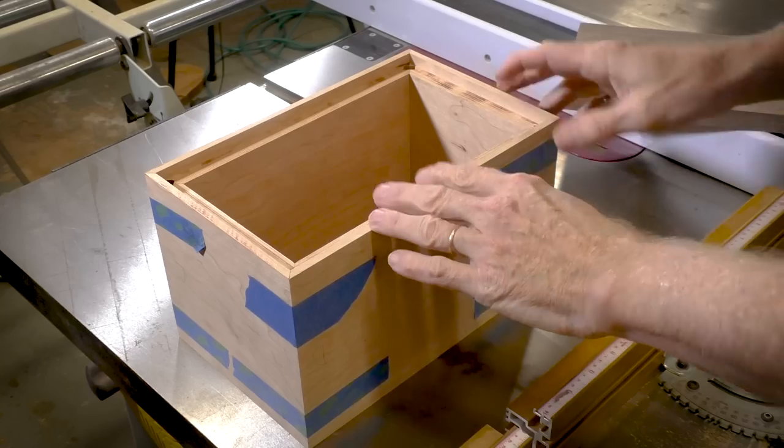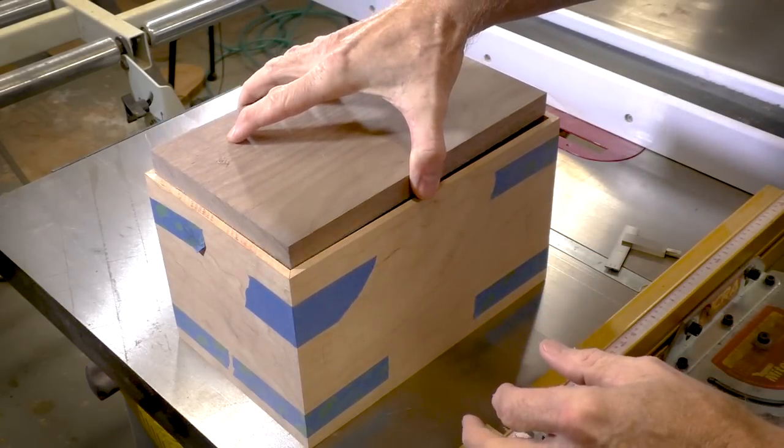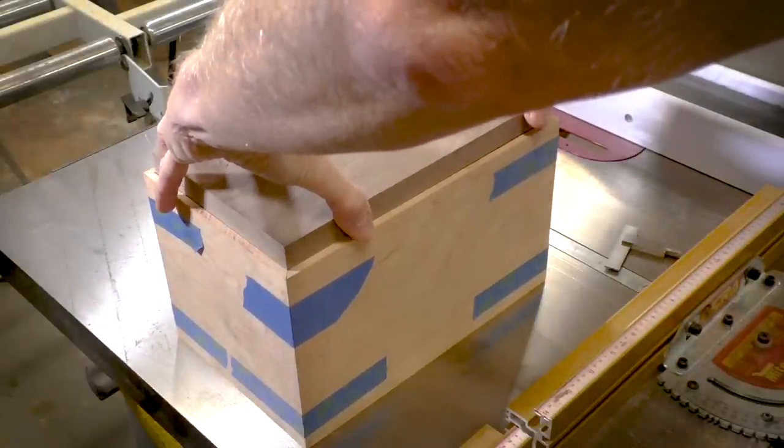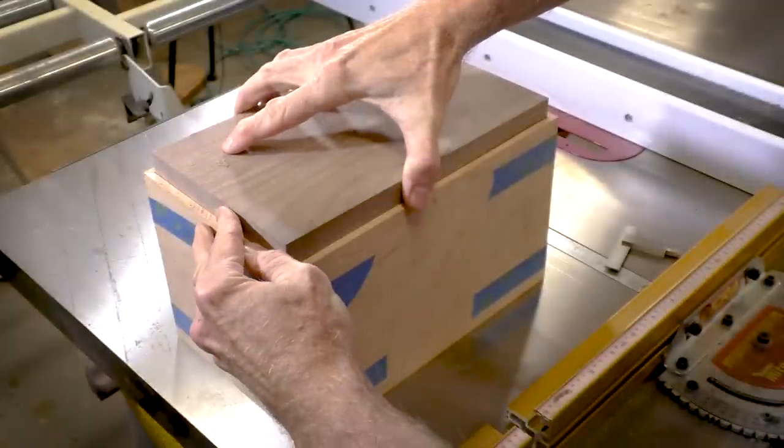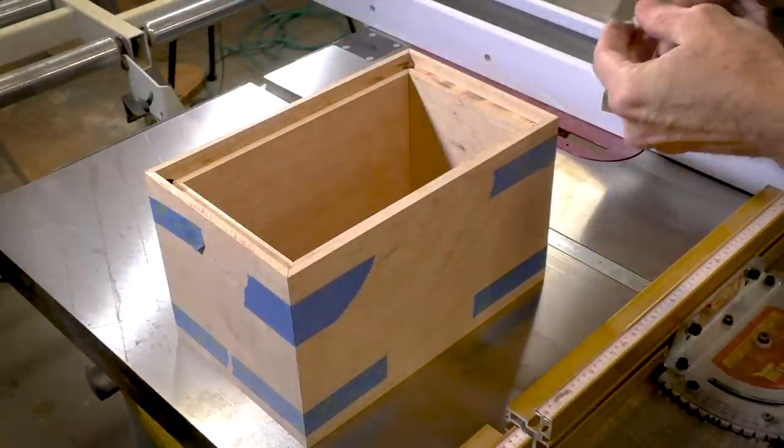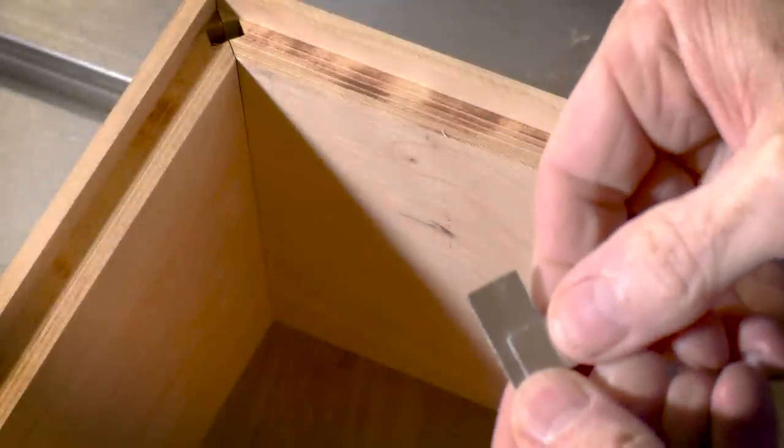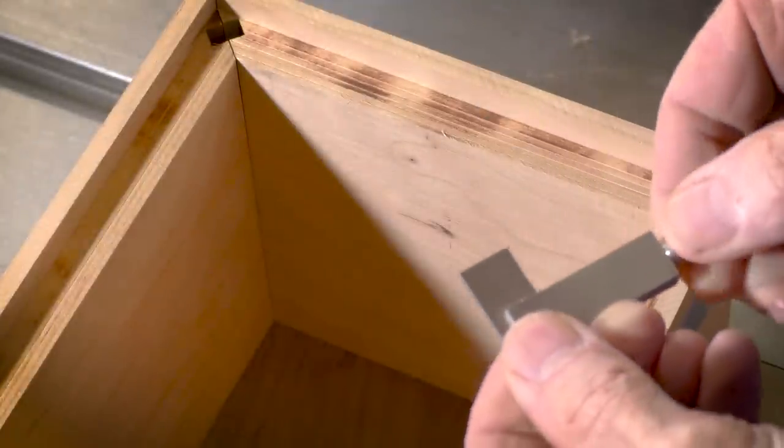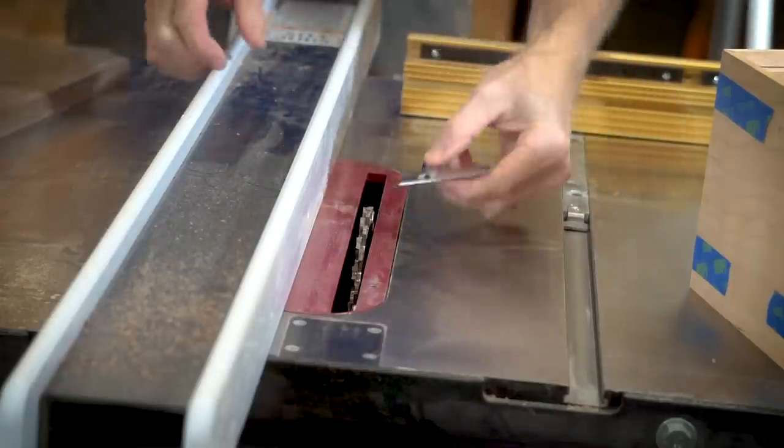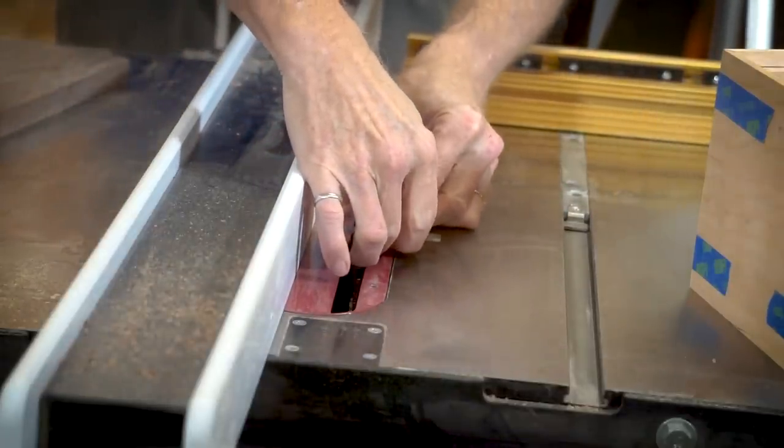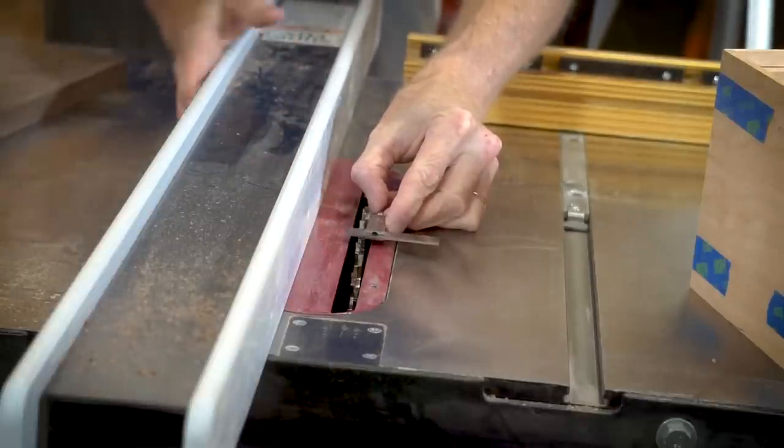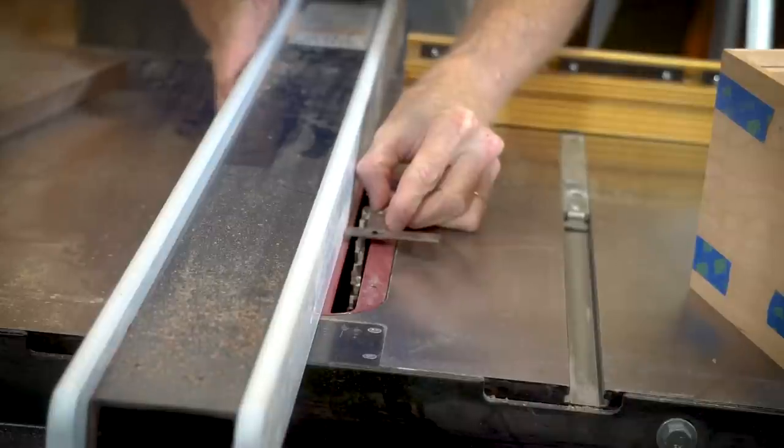I've got the sides of the box taped up and I'm going to set the bottom in to make sure it fits. I measured it pretty carefully so it should fit snugly. Now I'm using this measuring square from Lee Valley to measure the depth of this rabbet. I'll position it against the inside face of the box and tighten it up. Then I'll take the square and position it against the outside of the blade and move the fence across.